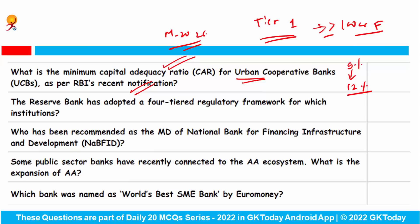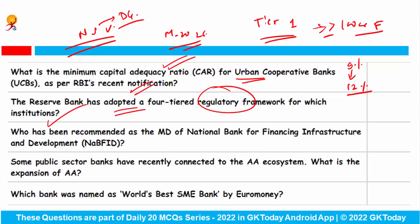This recommendation was given by a panel headed by NS Vishwanathan, the former Deputy Governor of RBI. The Reserve Bank of India has adopted a four-tiered regulatory framework for urban cooperative banks, based on the size of deposits, with the aim of strengthening financial soundness.